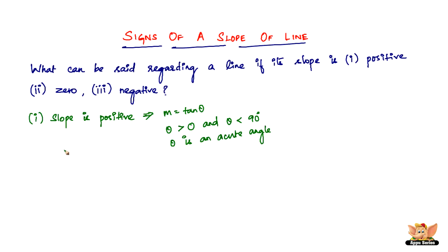So whenever you see that a slope of a line is positive, you have to understand that theta lies between 0 degrees and 90 degrees, and is not equal to 0 or 90. Therefore theta is an acute angle. That is what you can take away when the slope of a given line is positive.